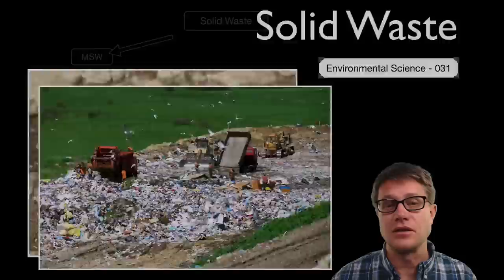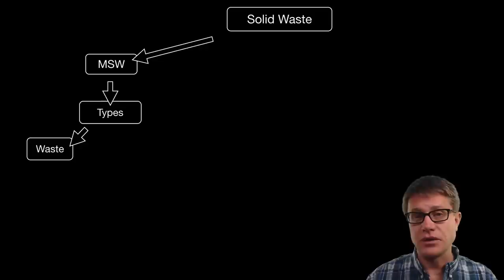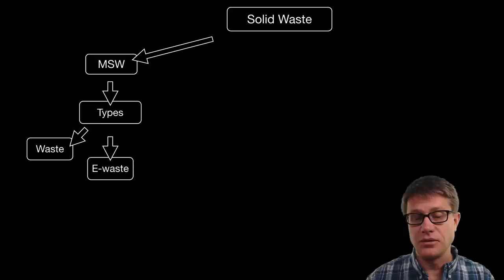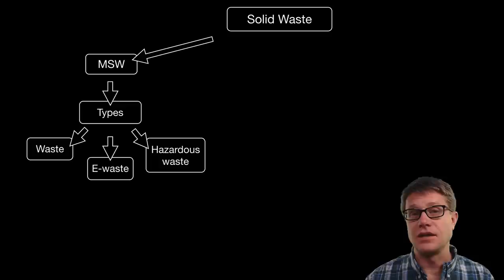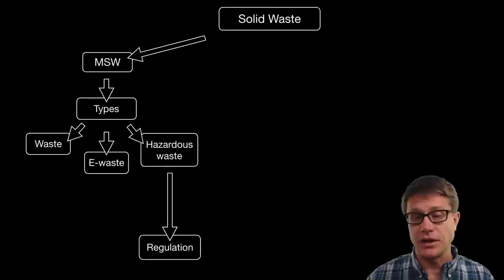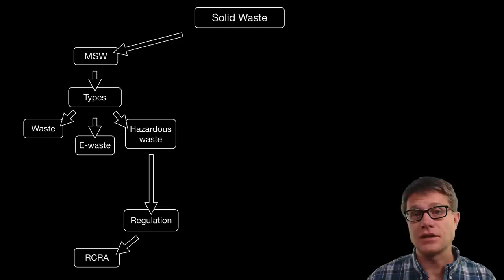MSW, or Municipal Solid Waste — you should understand what the major types of waste are. It is generally going to be paper, plastics, wood, yard clippings, metal, things like that. There are a couple of types you should be familiar with. E-waste — that is going to be our computers, phones, and televisions as we throw those away. And then hazardous waste. This is waste that causes human illness or changes that degrade the environment. We have regulations in place. The two you should be familiar with are RCRA, the Resource Conservation and Recovery Act, and then CERCLA, otherwise known as the Superfund Act. That is a way to clean up huge areas of hazardous waste.